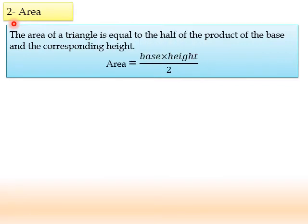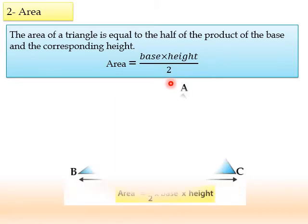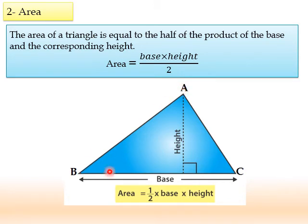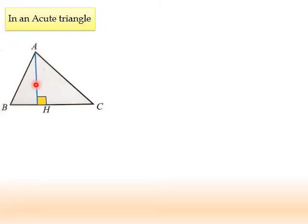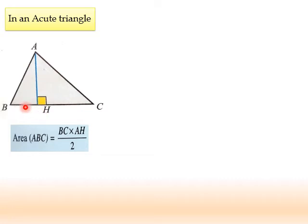The area of a triangle is equal to half the product of the base and the corresponding height. The rule is: area equals base times height divided by 2 — this is very important to keep in mind. For example, in triangle ABC, AH is the height relative to BC, and BC is the base. In an acute triangle, the height AH is inside the triangle, so the area of triangle ABC is AH times BC over 2.